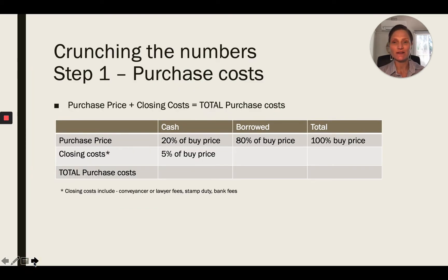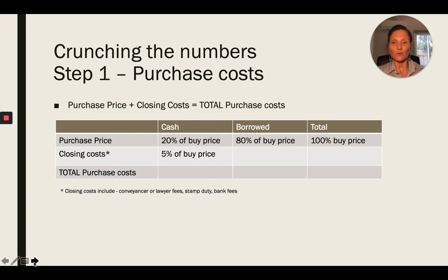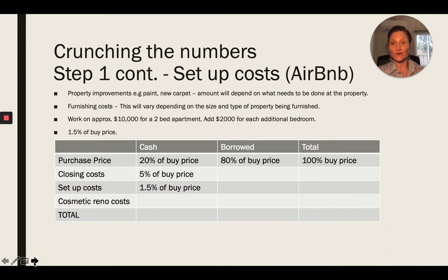We're going to crunch the numbers. Step one is looking at the purchase costs. First, you want to know the buy price or purchase price. Then you look at how much cash you need as a deposit and how much you need to borrow. Traditionally a 20% deposit means you avoid lenders mortgage insurance, borrowing 80% from the bank. Closing costs are estimated at 5% of the buy price, covering lawyer fees, stamp duty, and bank fees.